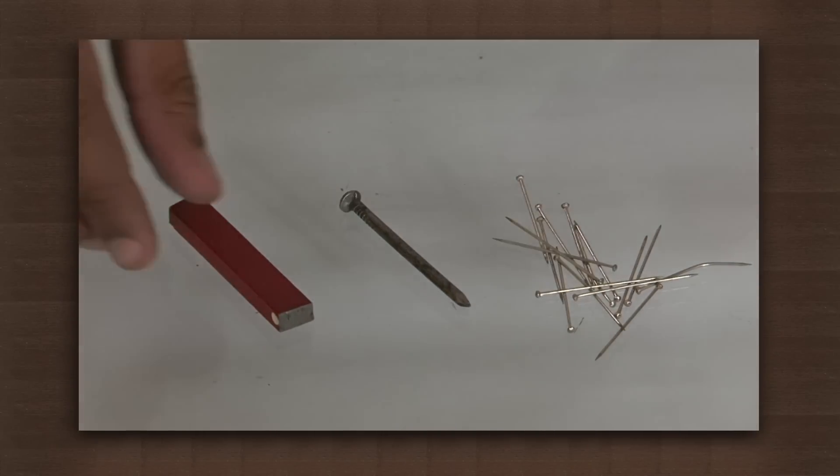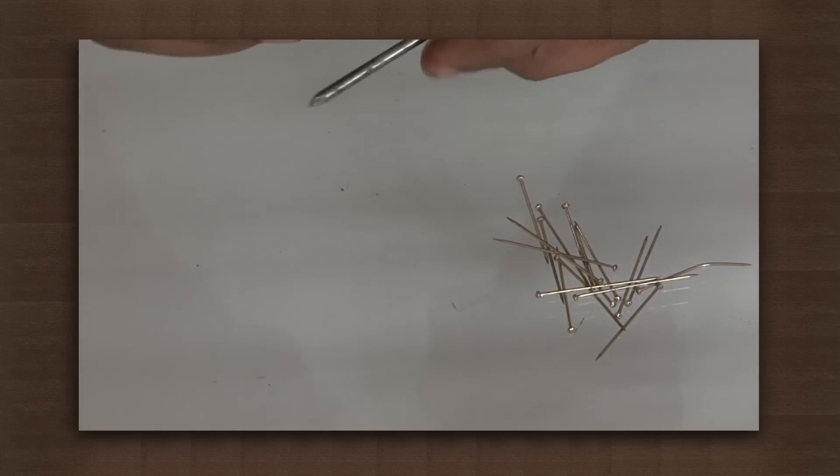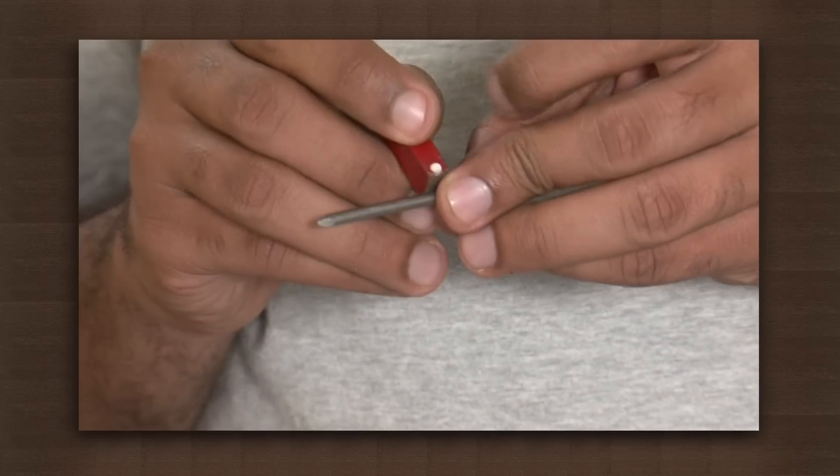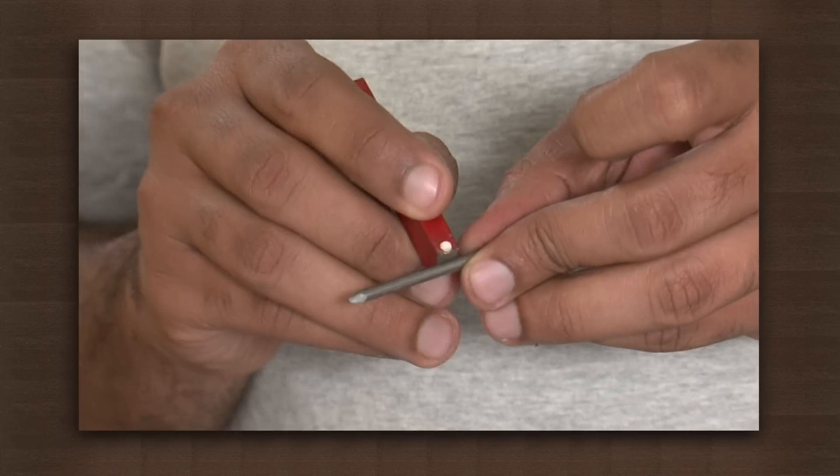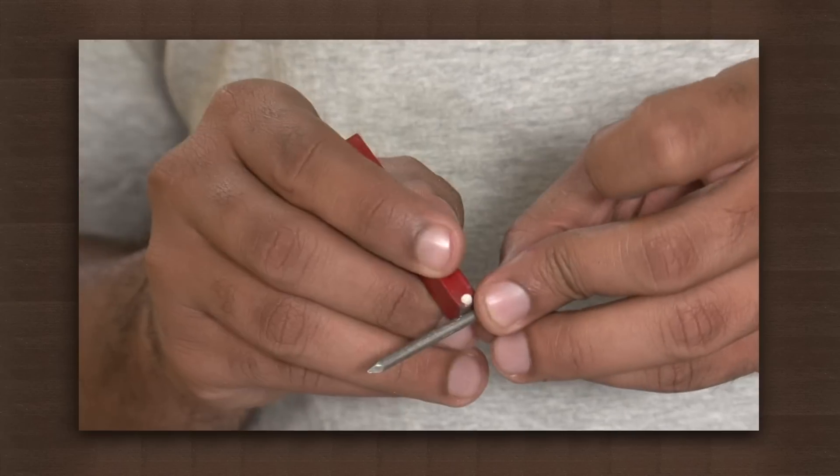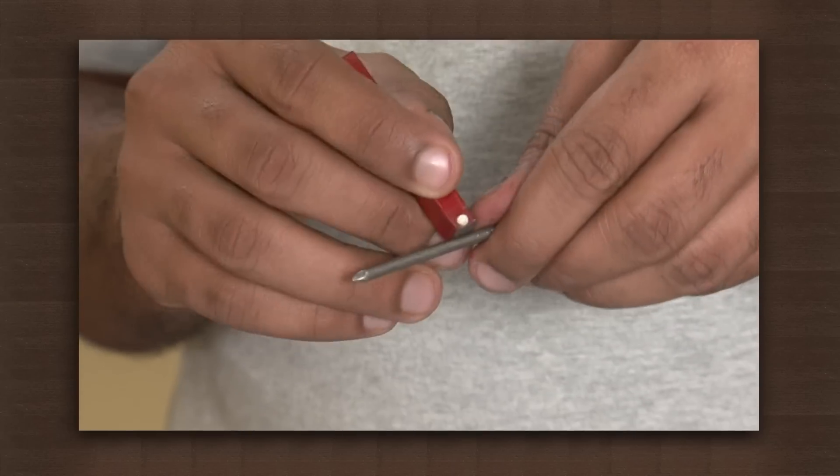We will take this iron nail and hold it up. Since we are using single touch method, we just need one magnet. We will run this magnet along this nail from one end to another in one smooth motion as many times as we can.